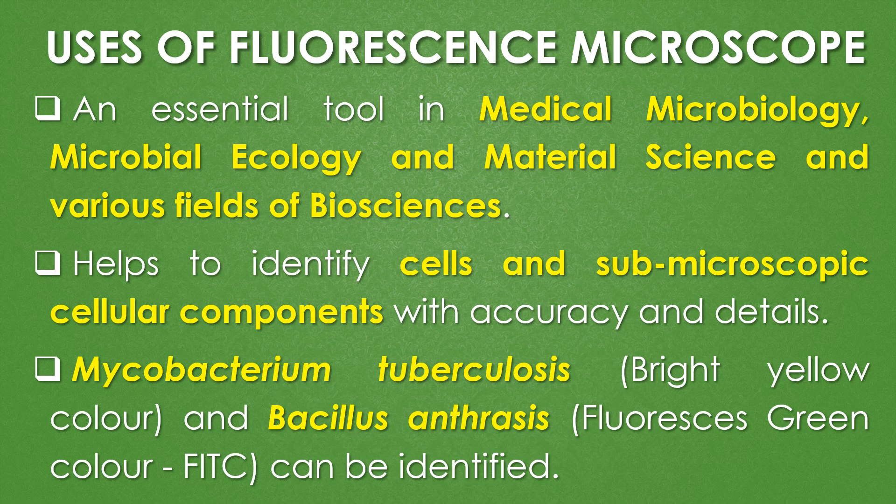Regarding the uses of the fluorescence microscope: it is an essential tool in various fields of biology like medical microbiology, microbial ecology, material science, and various biosciences. It helps identify cells and sub-microscopic cellular compounds with accuracy. It is also used for the identification of Mycobacterium tuberculosis, which is the causative agent of tuberculosis and appears as a bright yellow color cell, and Bacillus anthracis, the causative agent of anthrax, which fluoresces green color using FITC.